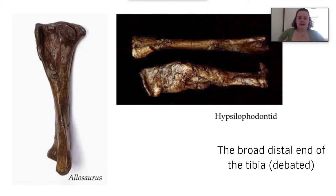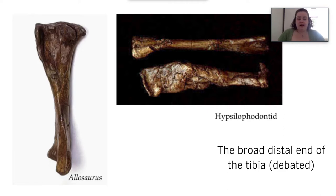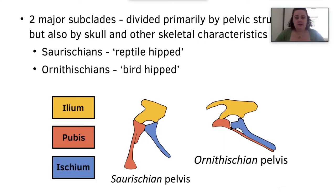The final feature is the broad distal end of the tibia, as you can see really well on this Allosaurus bone here. This is somewhat debated, so this is one of the more uncertain factors.